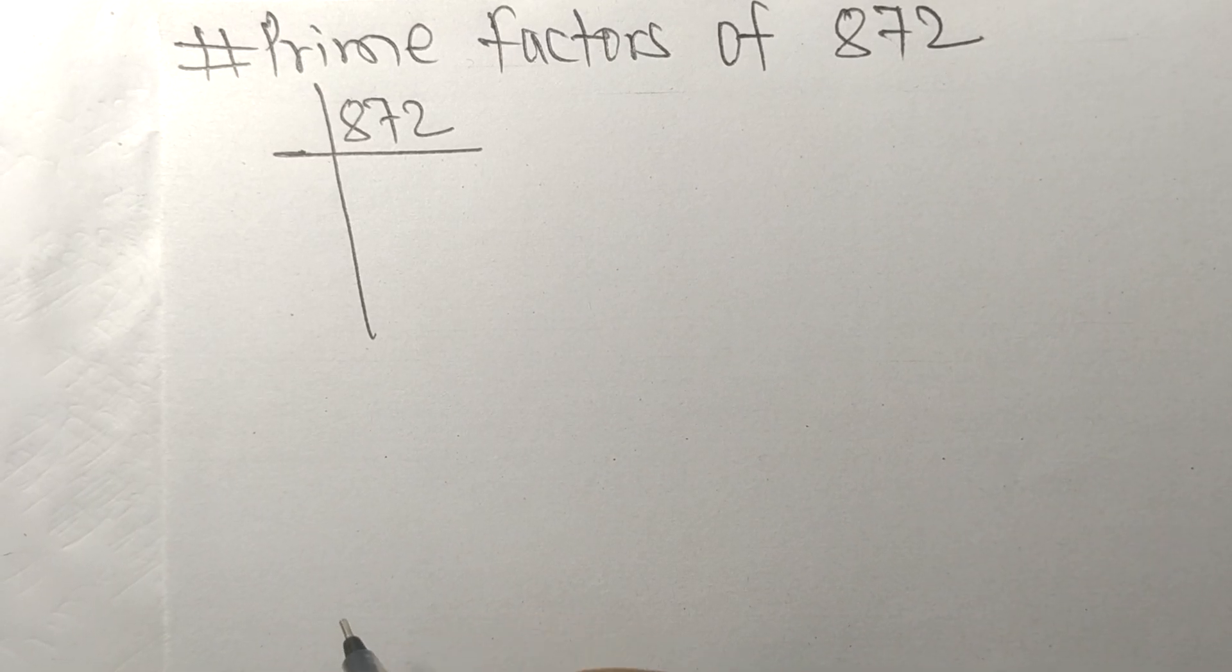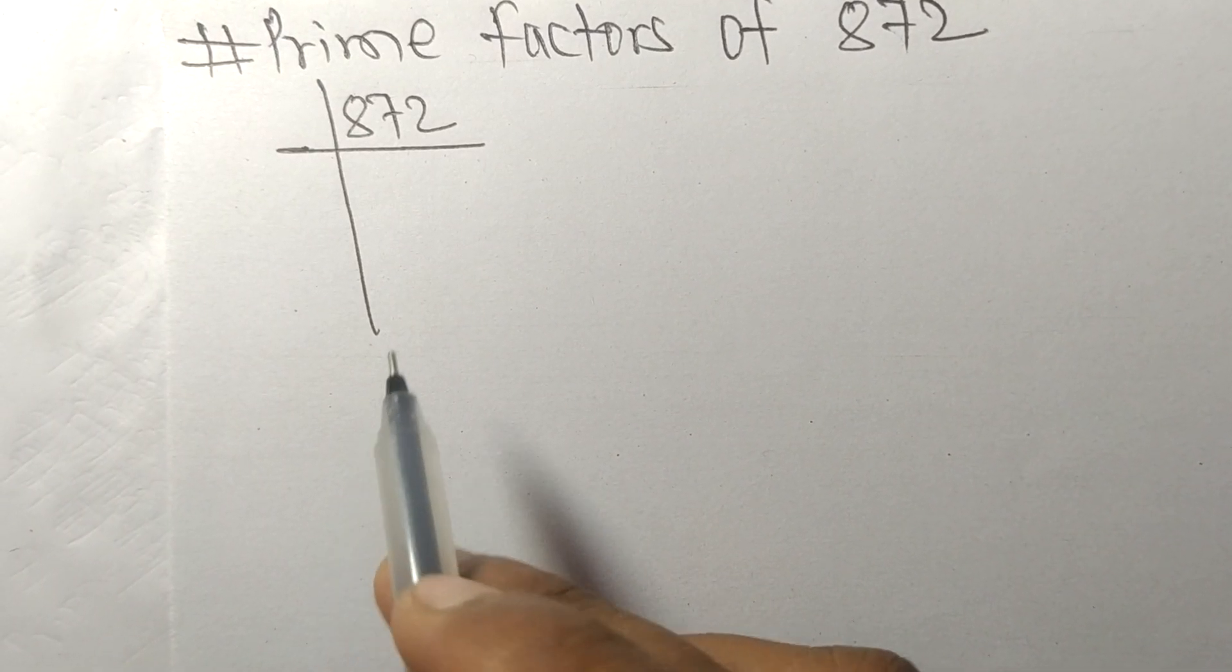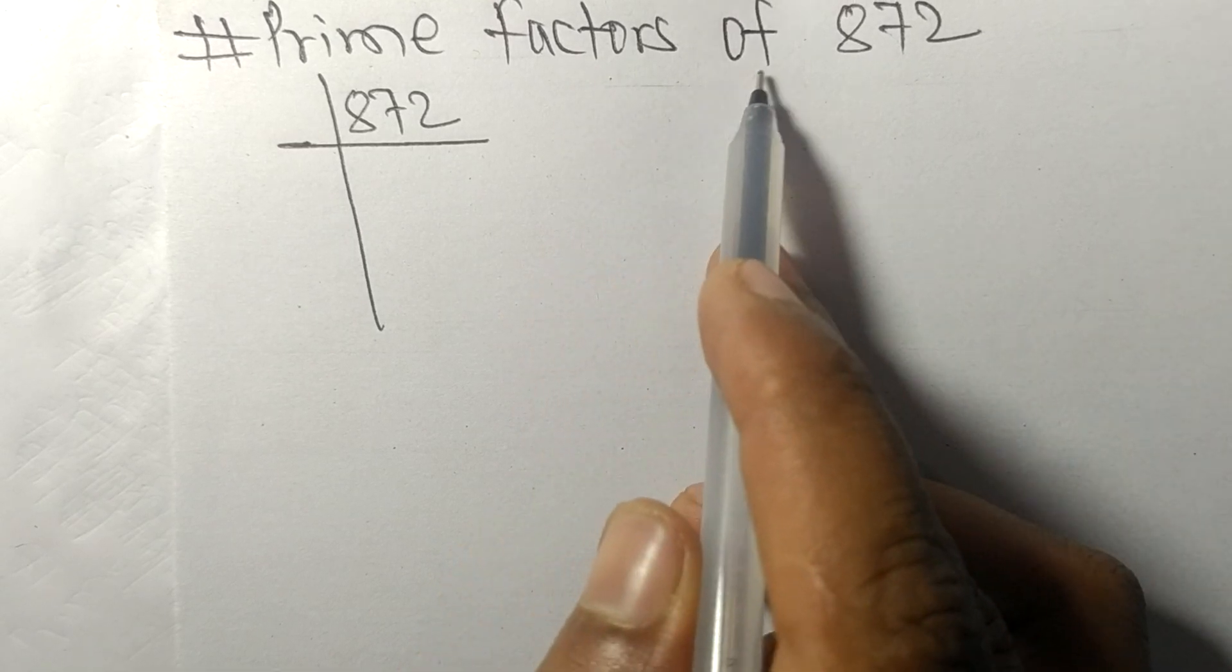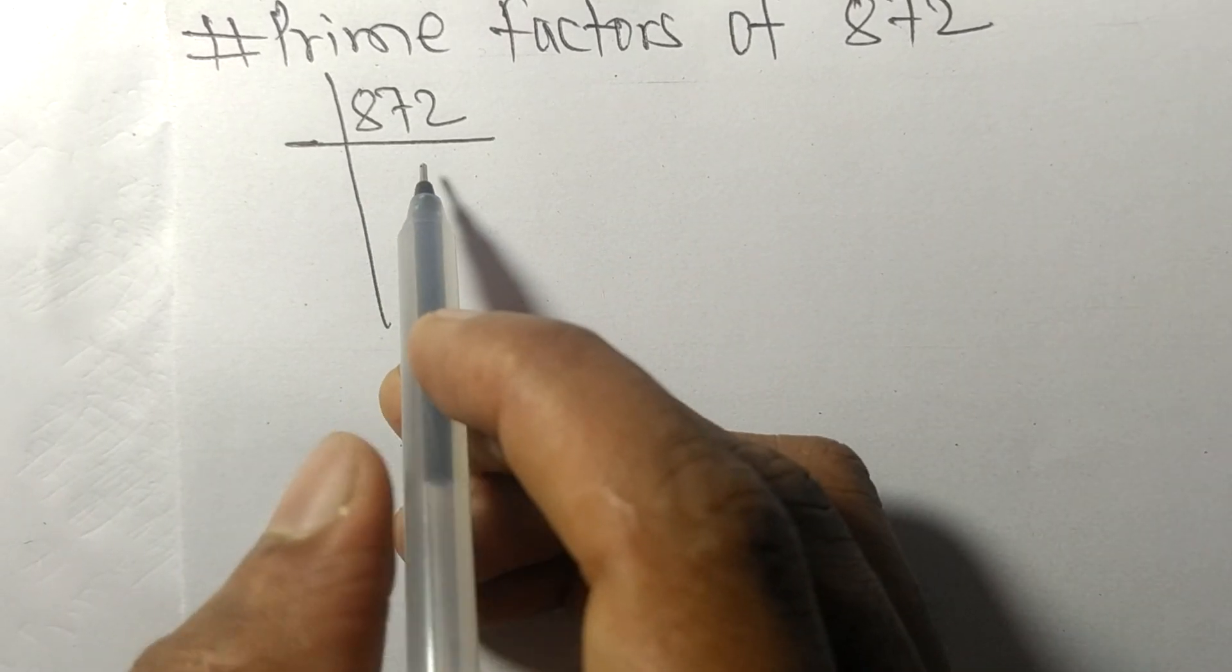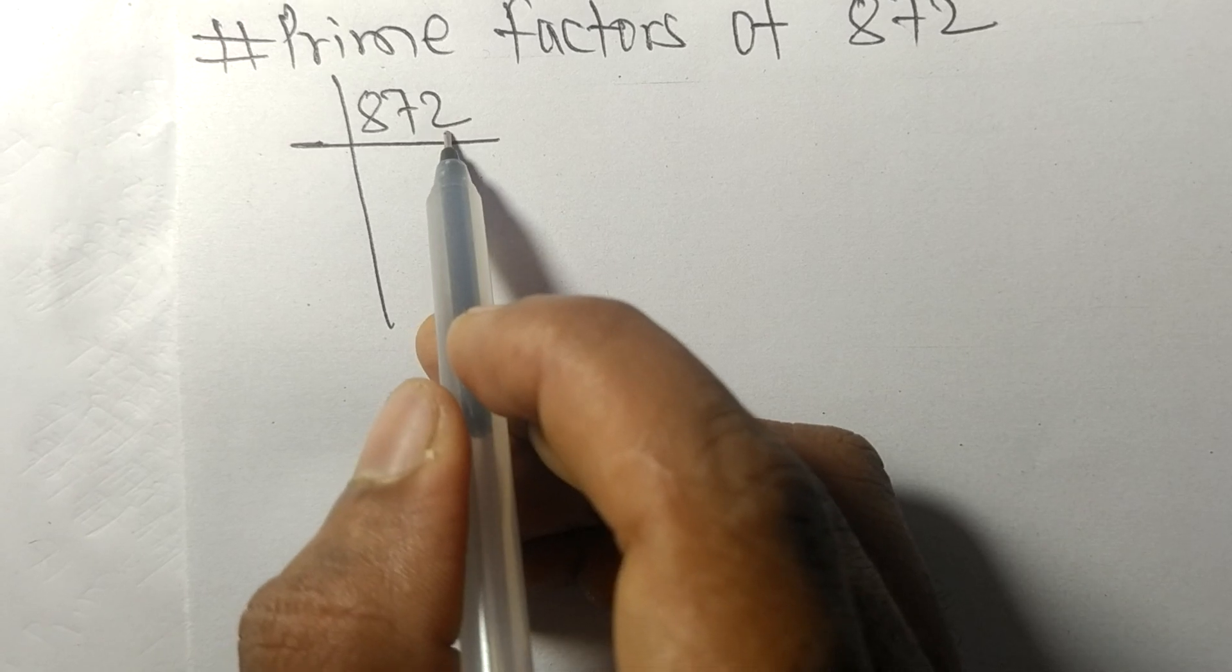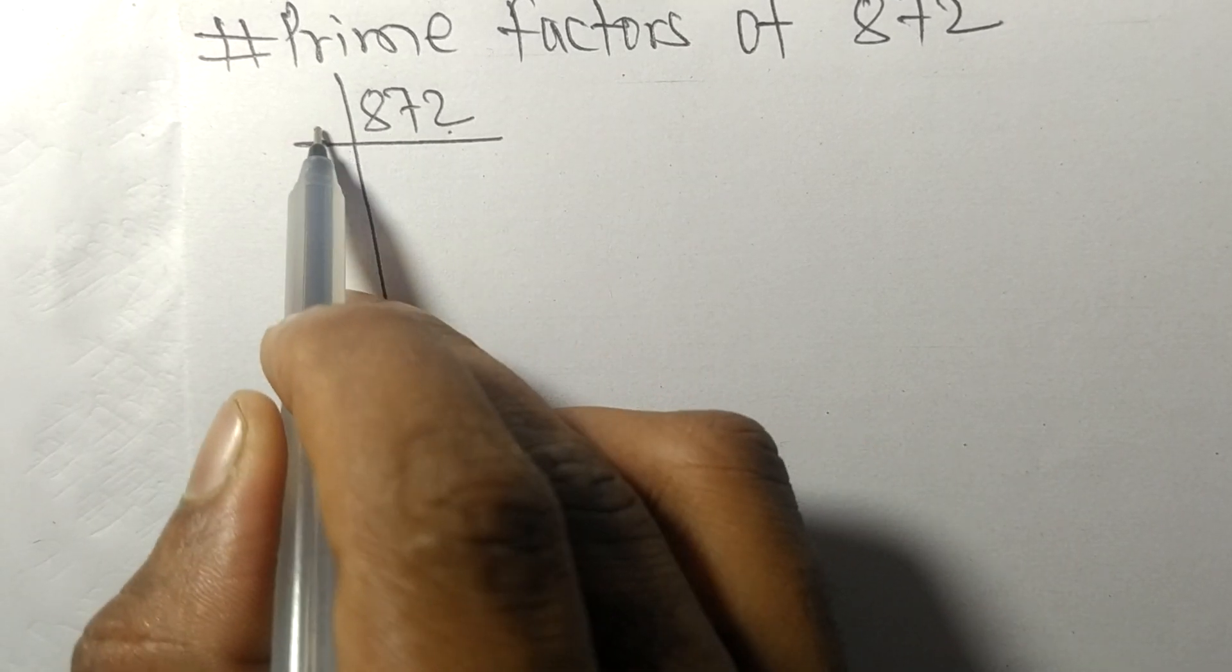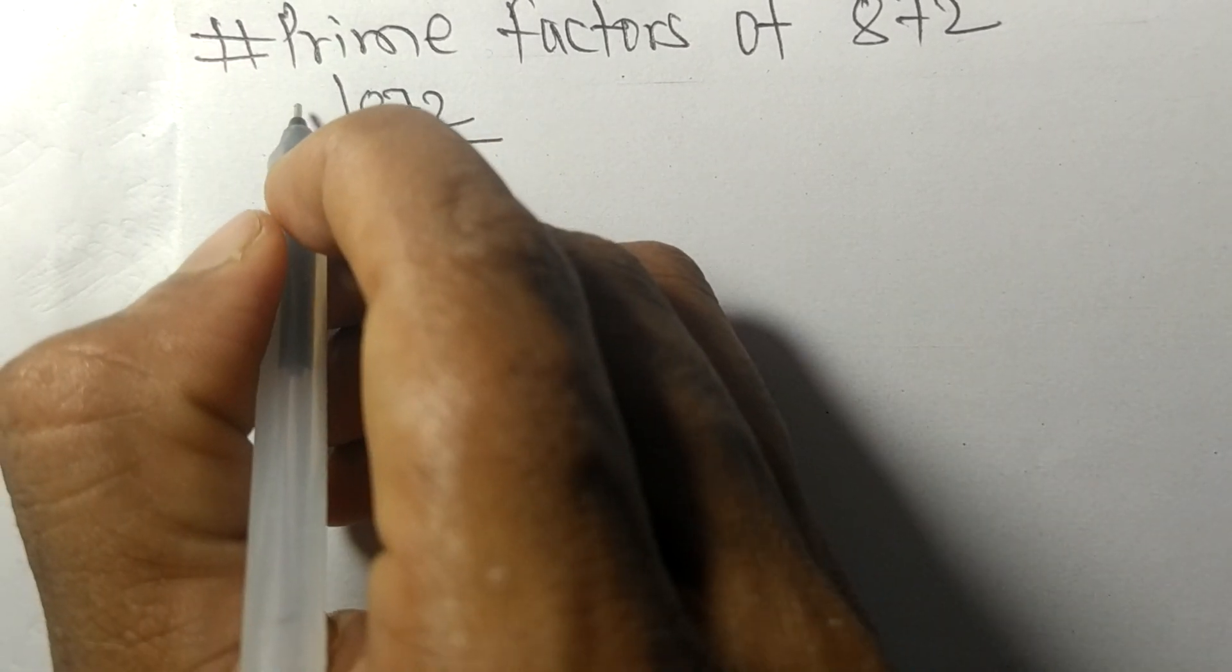So today in this video we shall learn to find the prime factors of 872. It contains an even number 2 at last, so it is exactly divisible by 2.